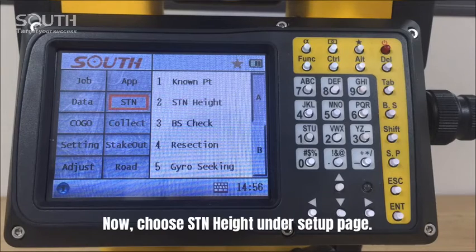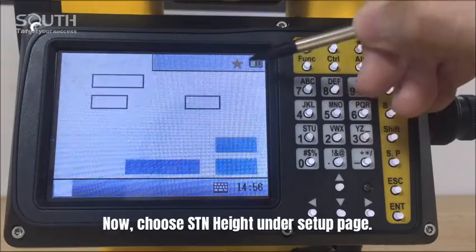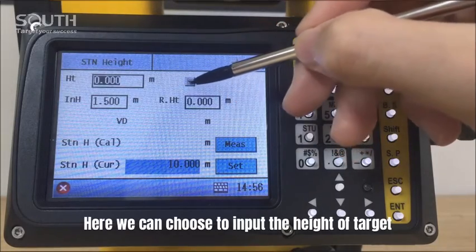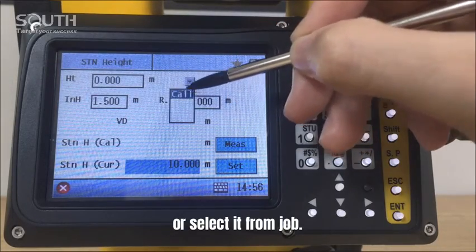Now, choose station height under setup page. Here we can choose to input the height of target or select it from job.